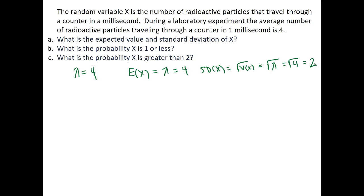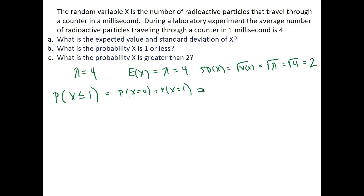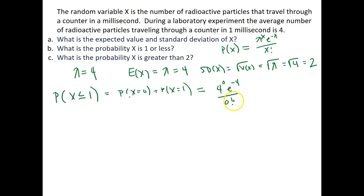What is the probability that x is one or less? That is P(x ≤ 1), which equals P(x = 0) plus P(x = 1). The probability mass function for a Poisson distribution is lambda^x times e^(−lambda) over x factorial. With lambda equal to four, this gives us four to the zero power times e^(−4) over zero factorial, plus four to the first power times e^(−4) over one factorial.